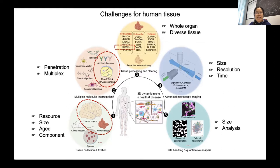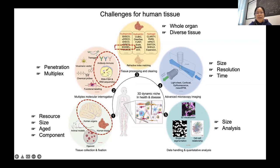For human tissue, there are several challenges existing at each step. About tissue collection, we need to consider where the tissue comes from, how large it is — whether it is an intact organ or a small piece — and also how old the tissue is, because with age there is accumulation of lipofuscin and insoluble collagens which make the tissue components more complex.